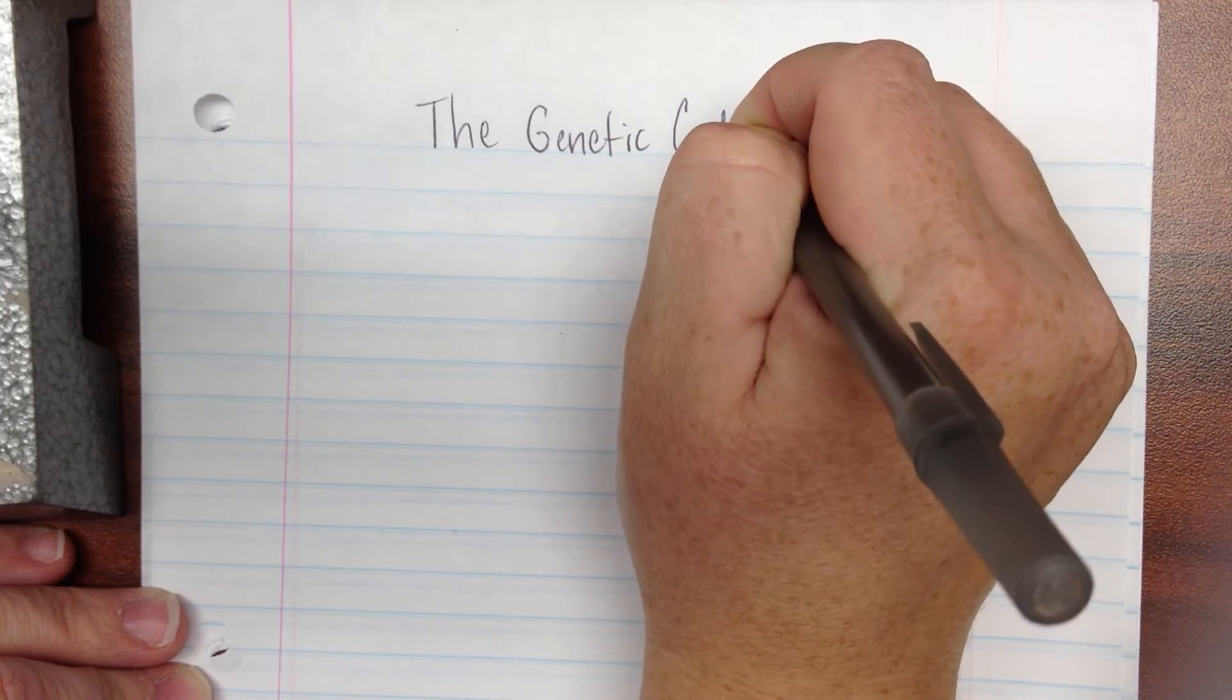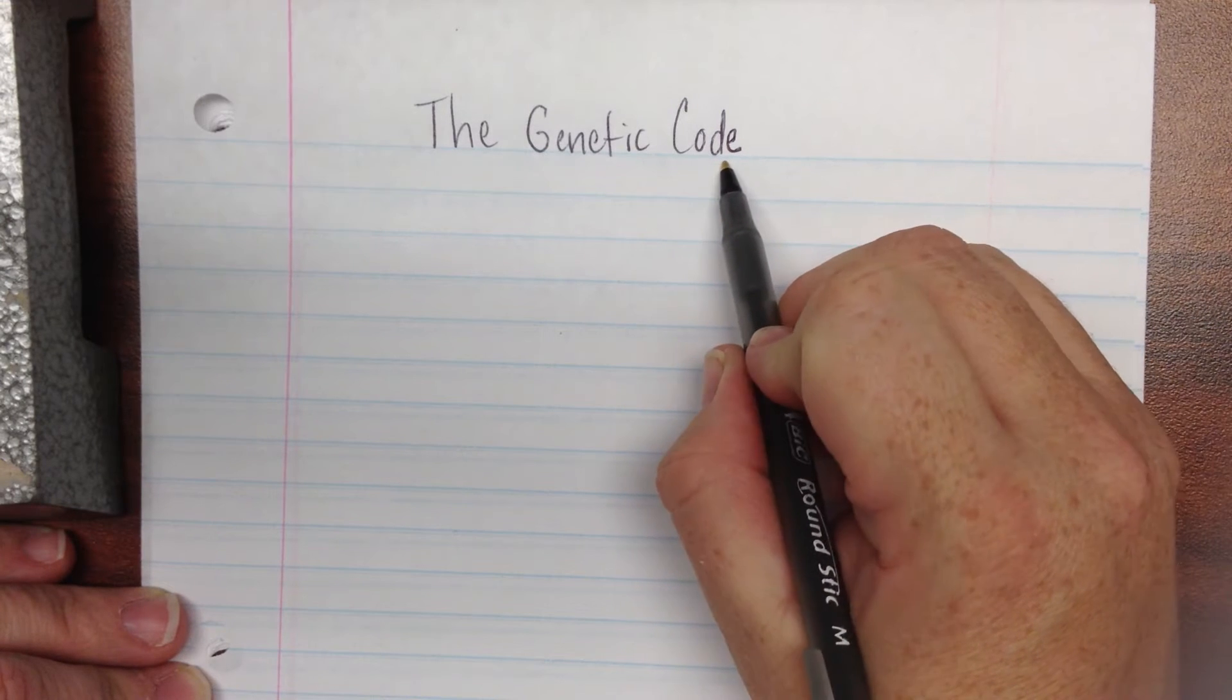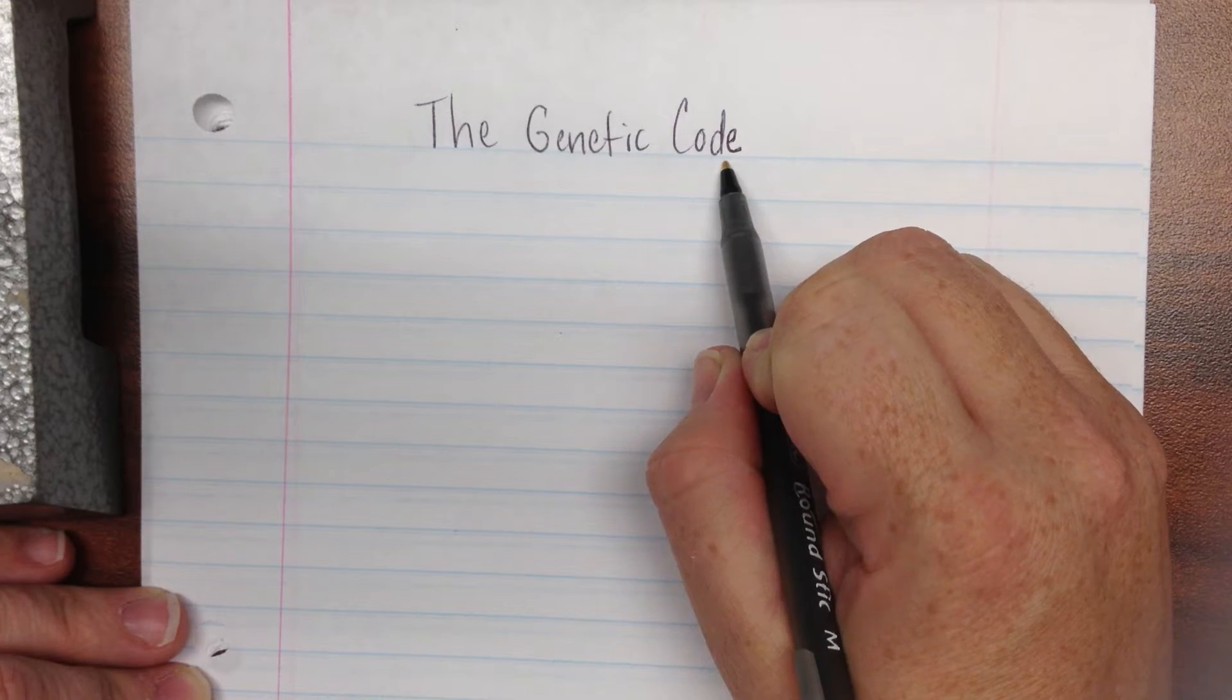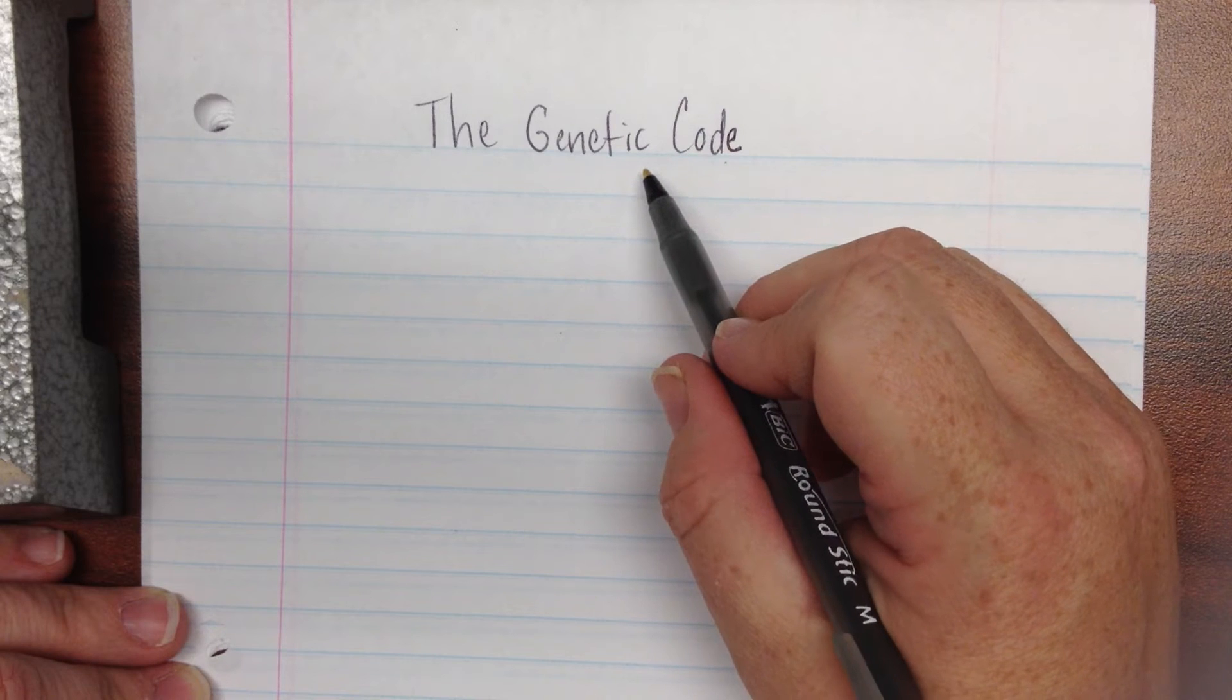Now, you've heard that word code before. Many of you may be in terms of computer coding, and if you know anything about coding with computers, you know that that's basically zeros and ones in different orders, and that tells the computer what to do. Well, similar things are going to happen with the genetic code.